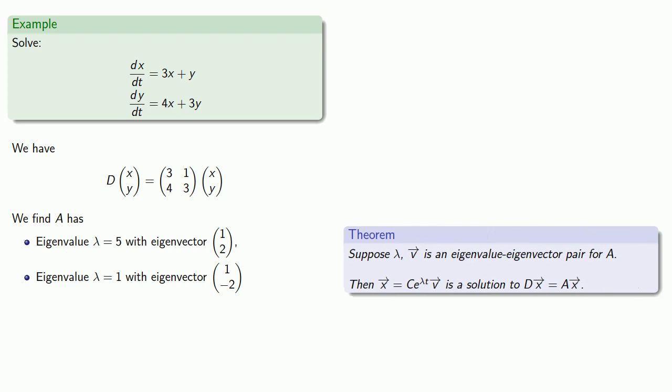And so our theorem says the solution will be e to power 5t times the eigenvector 1, 2, e to power t times the eigenvector 1, negative 2, or any linear combination thereof.